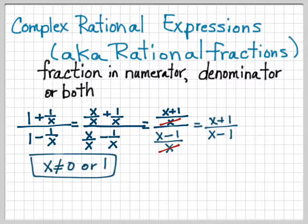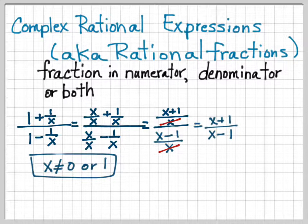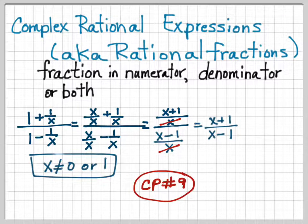Also, going back to our original expression, x cannot be 0 — because you'd have 1 over 0, which is undefined — and x cannot be 1, because then we'd have 1 − 1 = 0 in the denominator, which is also undefined. Go ahead and do checkpoint 9.